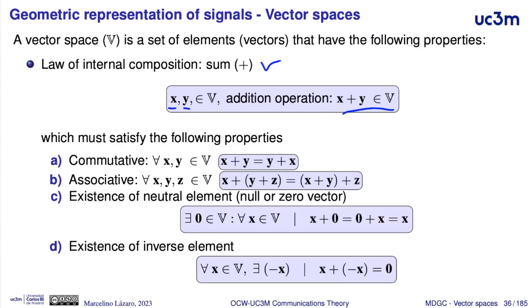The internal law, the addition, must be commutative and associative. A neutral element, or zero vector, must exist in the vector space, and the inverse element — that added to a vector produces the zero vector — must also exist in the vector space.